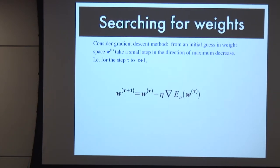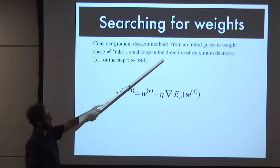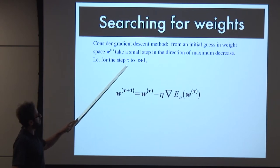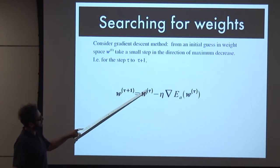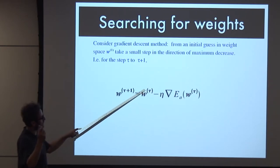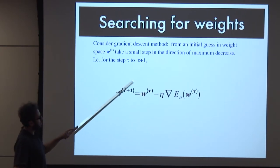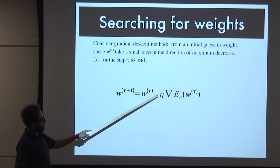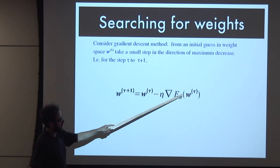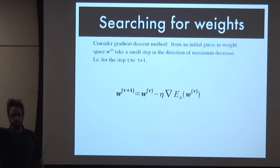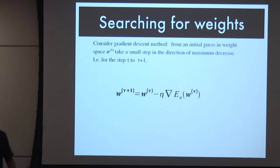We're going to do something simple: just use gradient descent. We'll make an initial guess by choosing some random weights, then do this iteratively. The weights at step tau+1 are the initial ones plus an update based on this gradient - which direction should we move to improve our score? You choose a random point in this landscape and then try to climb uphill.